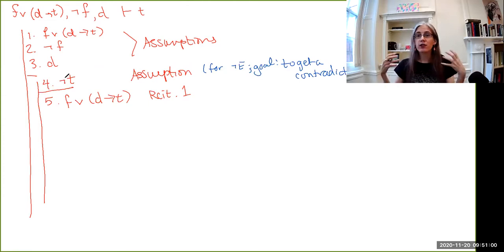And so if you think about the truth of things, then we should be able to get D implies T. What would this look like? Well, first, you need two sub-proofs, one for each of the disjunctions. So this is our first one.